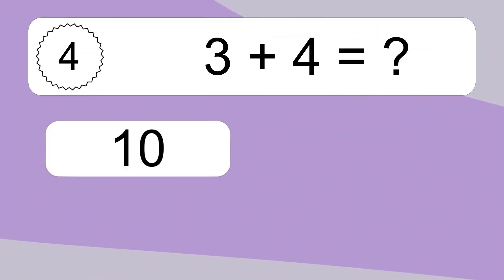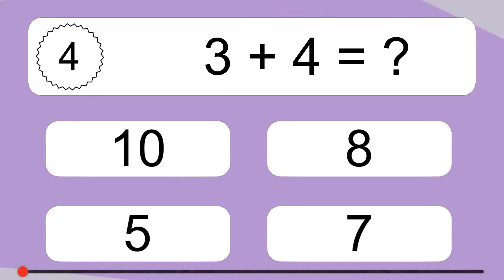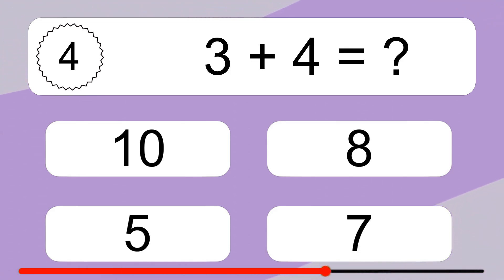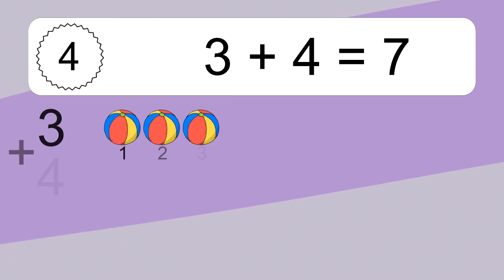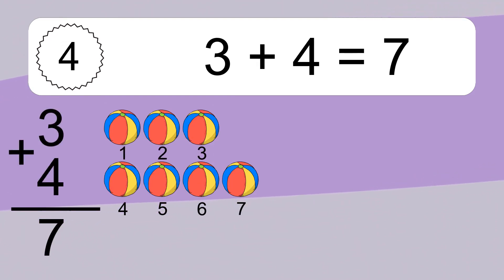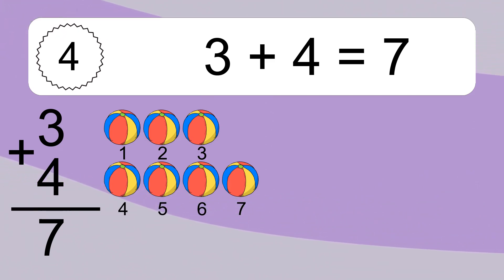3 plus 4 equals what? 3 plus 4 equals 7. Let's count it. 1, 2, 3, 4, 5, 6, 7.